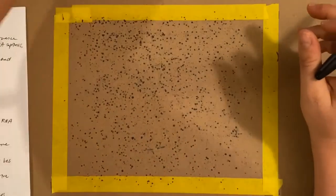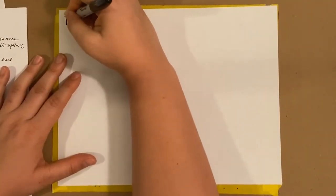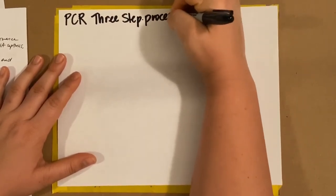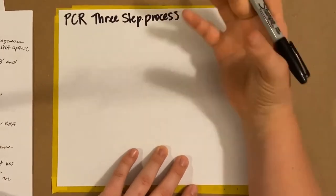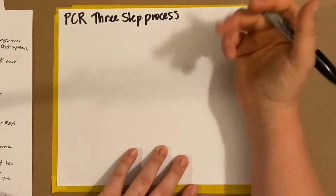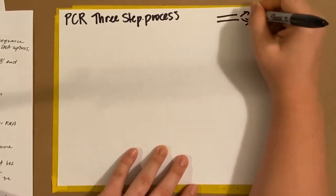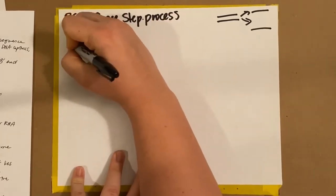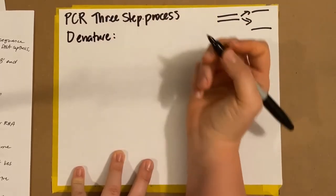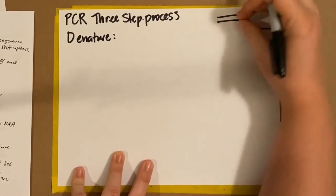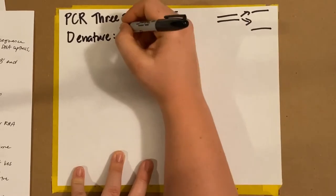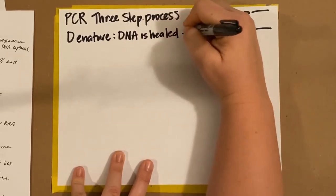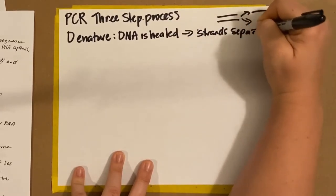We're going to go through the steps of PCR. It's a three-step process. You initially start with a small sample of DNA. We want to make more copies, so we can actually separate the DNA strands and then start to make new strands — similar to the process of replication. The first step is called denaturation. What it means is that the DNA strand is heated up so the strands separate. So DNA is heated, and that makes the strands separate.